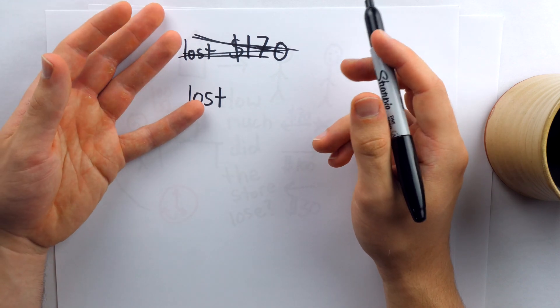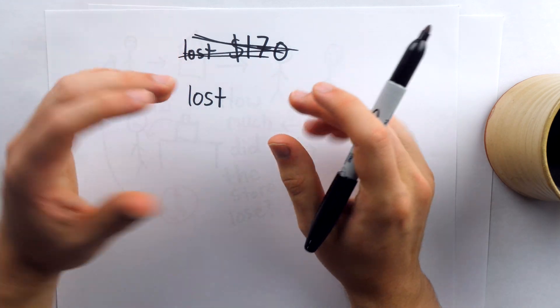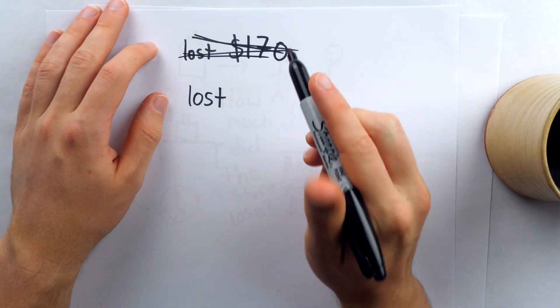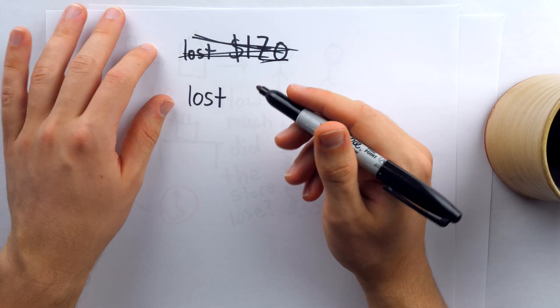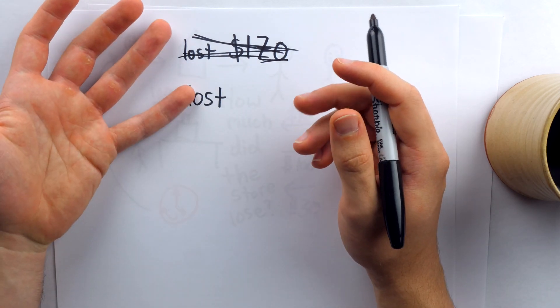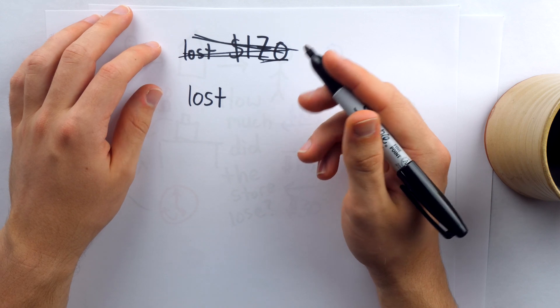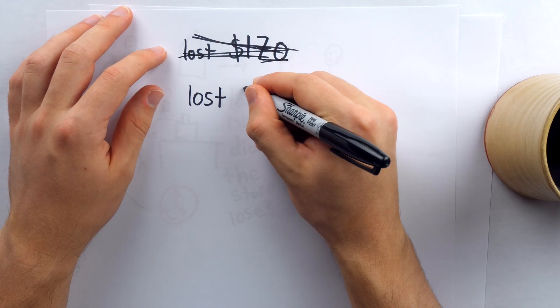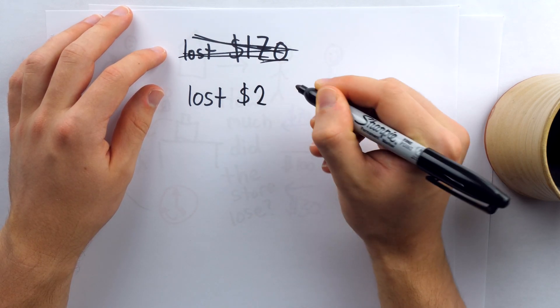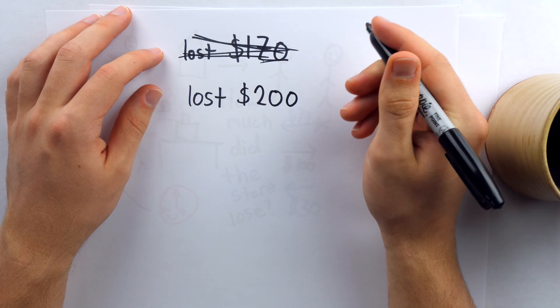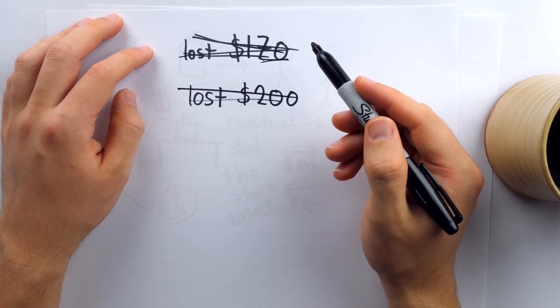Another potential wrong answer is to say the store lost the $100 that was stolen, they lost the $70 worth of goods, and they lost the $30 which were given to the man in change, in which case you would say that the store lost $200. That is not correct either.